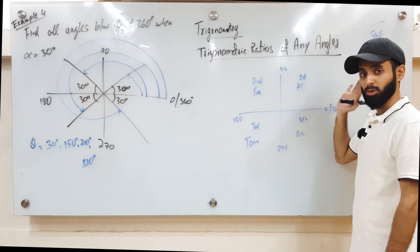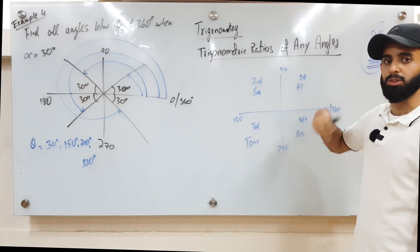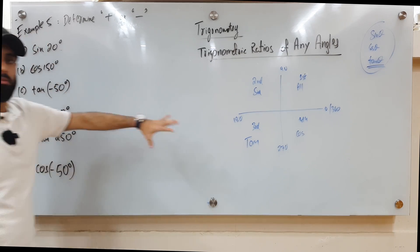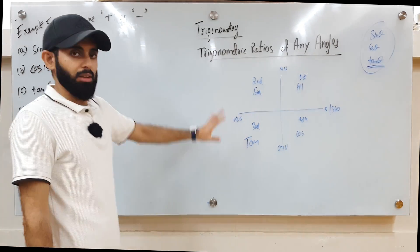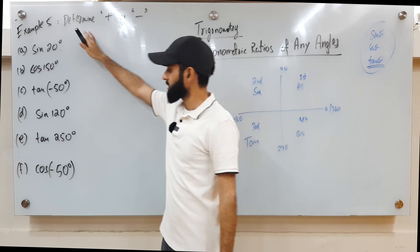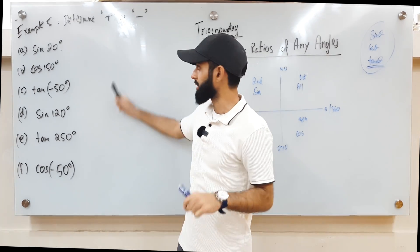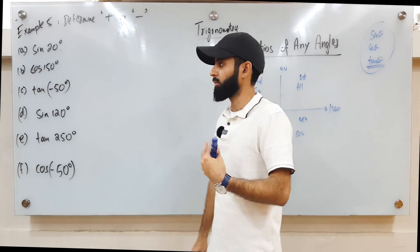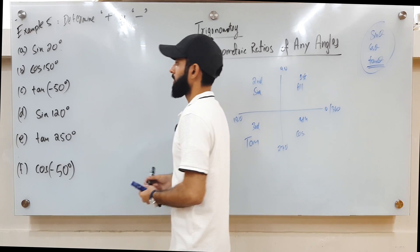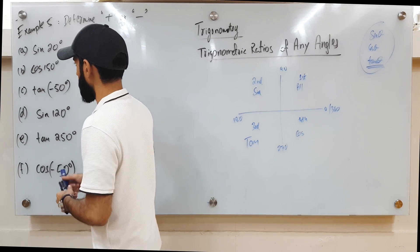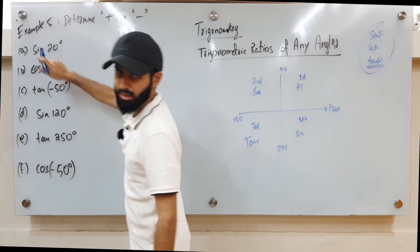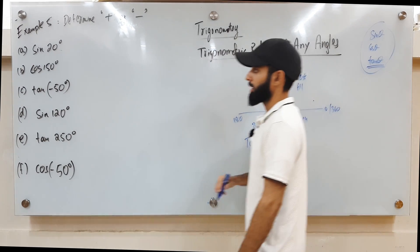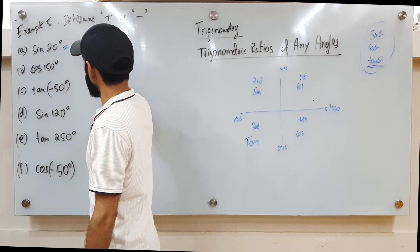Make sure you pay close attention to this. If you didn't get it, re-watch the video or let me know in the comments. Here's example 5 to cement this concept — we're going to determine whether these trigonometric functions are positive or negative without a calculator. We start with part A: sine 20. Since 20 keeps us in the first quadrant, where all functions are happy, this will be positive.